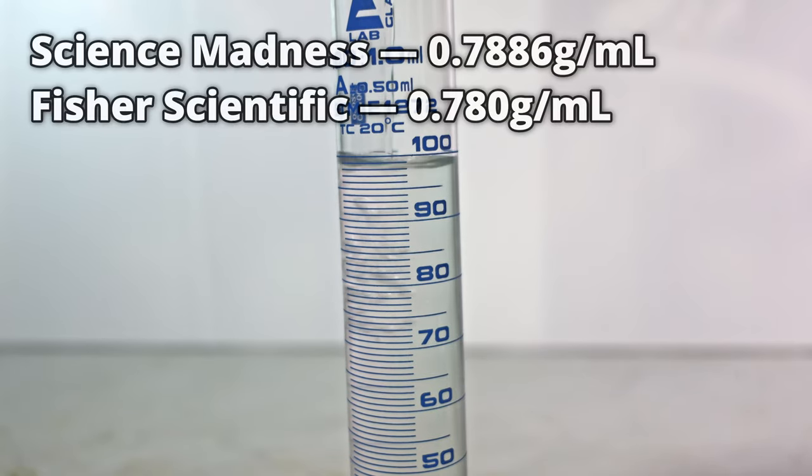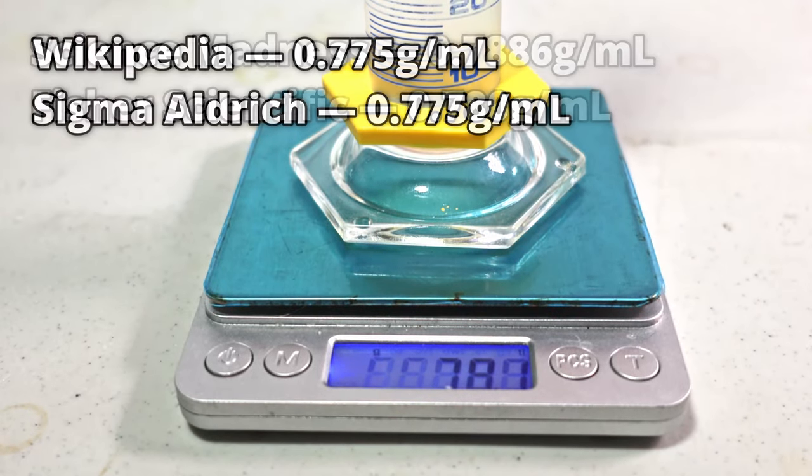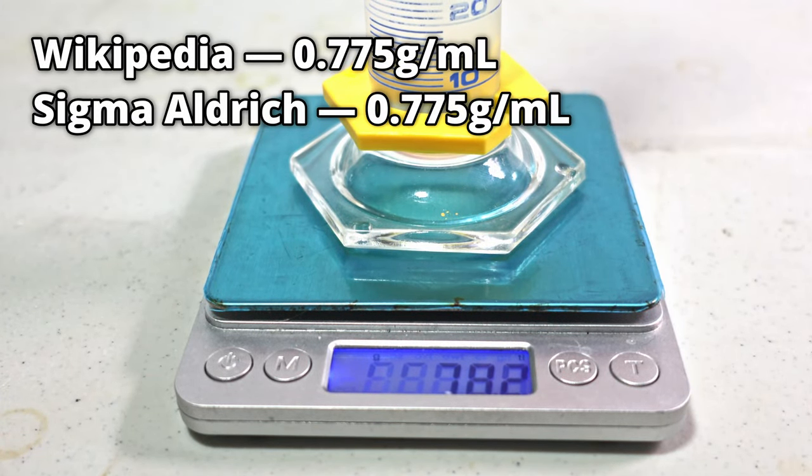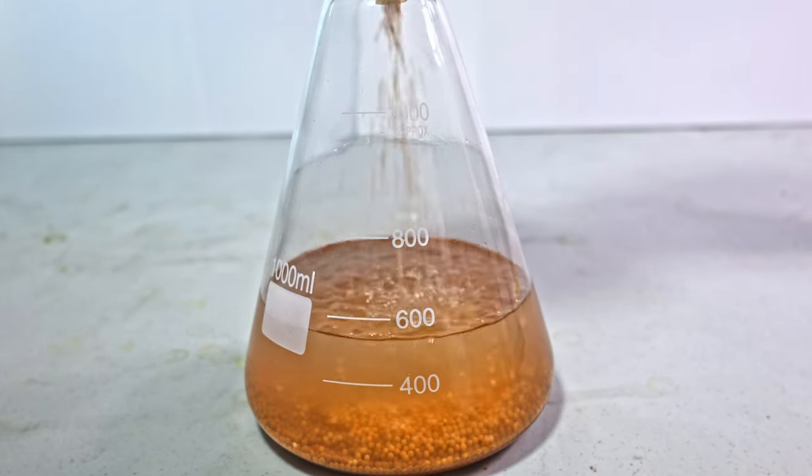Some places like Science Madness and Fisher Scientific say tert-butanol's density is 0.78 grams per milliliter, but other places like Sigma-Aldrich and Wikipedia have it at 0.77. Either way, I'm going to add another 100 milliliters just to make sure there is no more water.